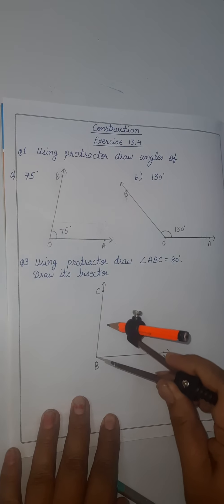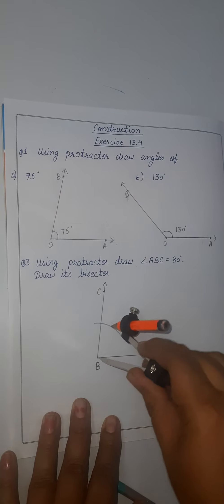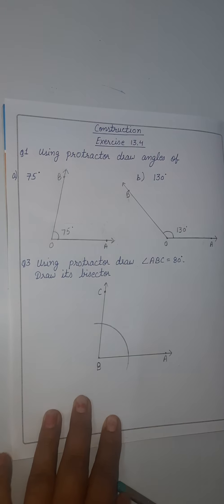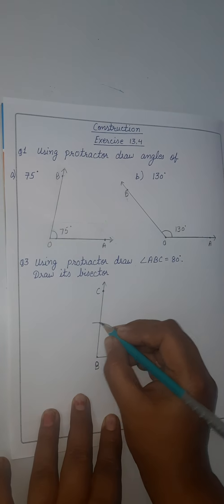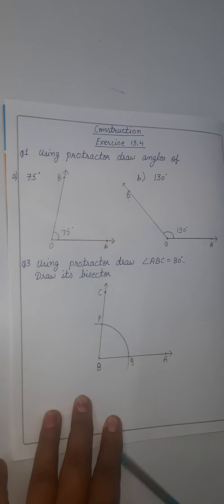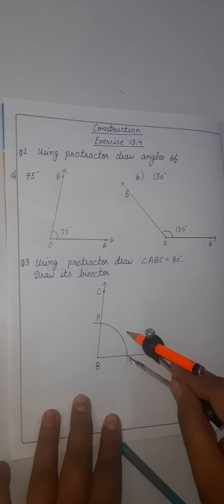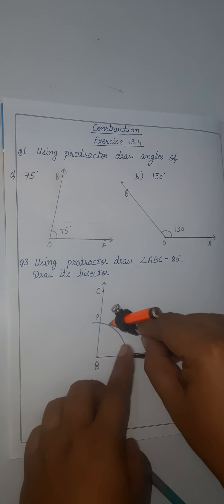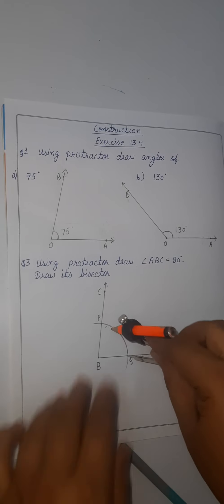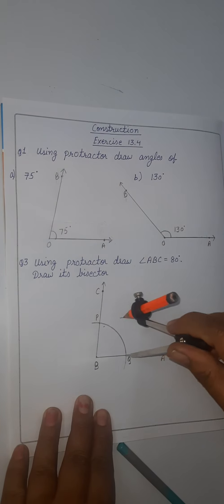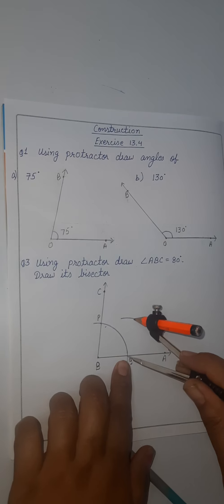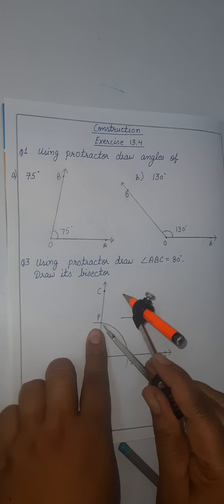With center B, I will cut an arc of any radius. Let's cut an arc and mark one point as point P and one point as point Q. Now we will take a radius more than half of PQ. We will cut an arc inside this angle from point Q.